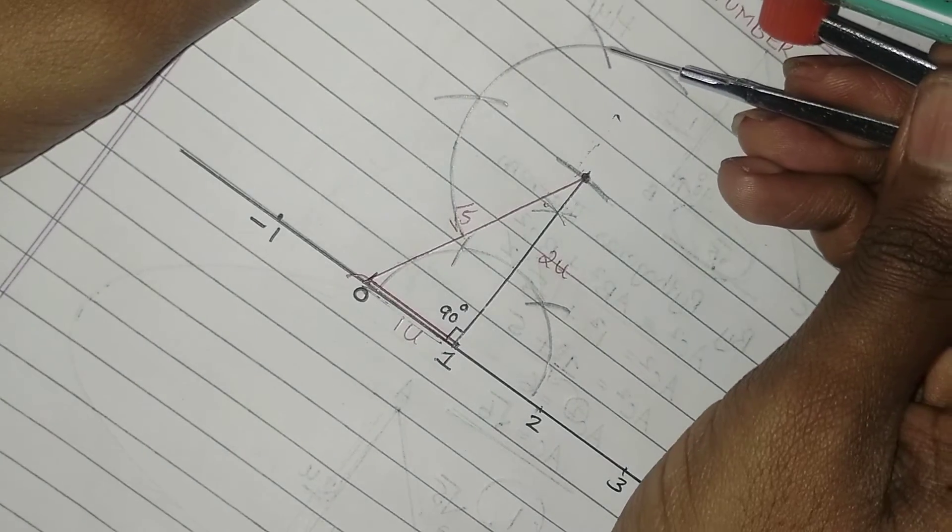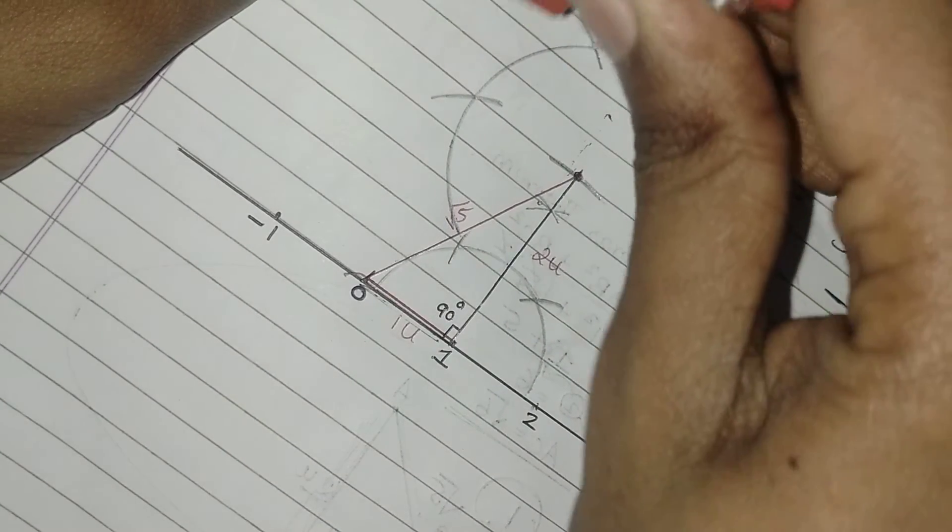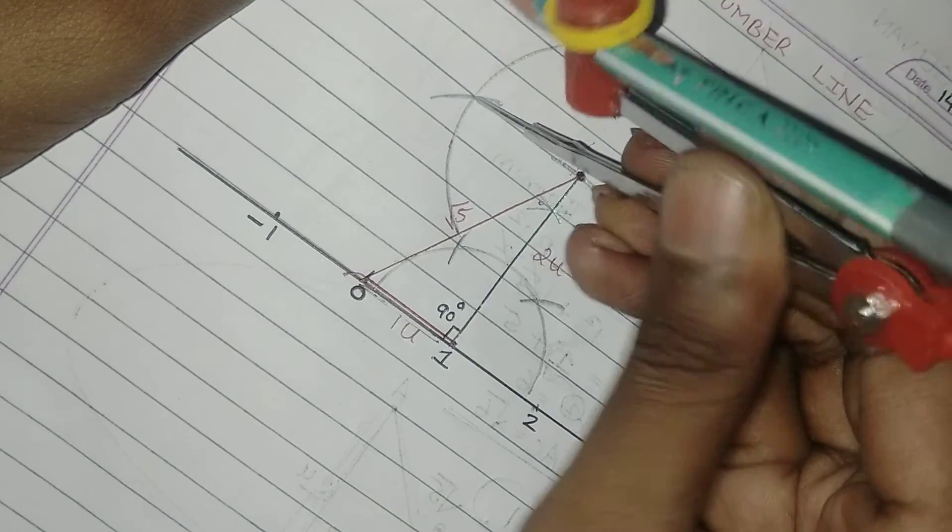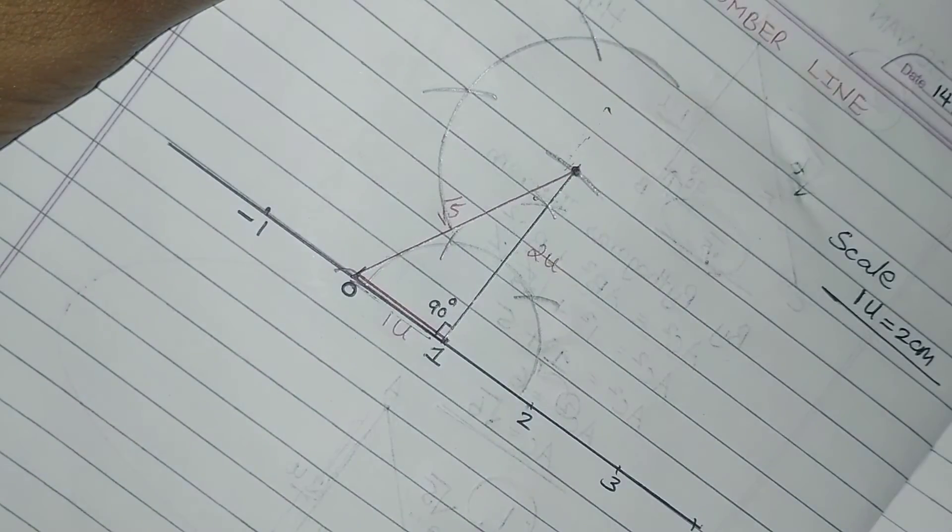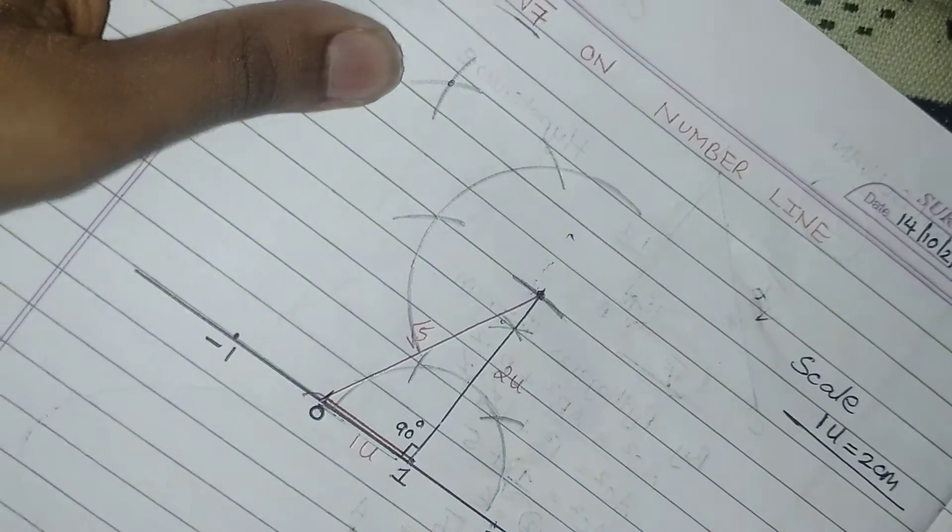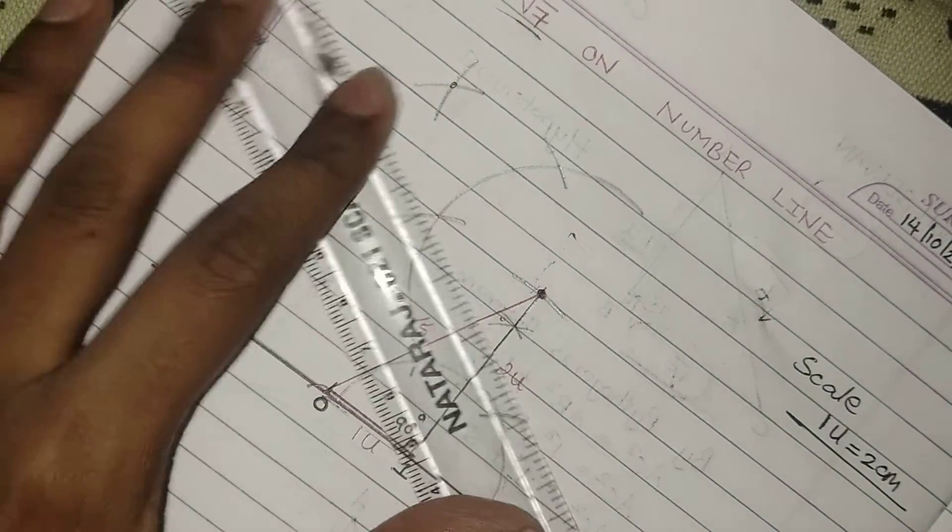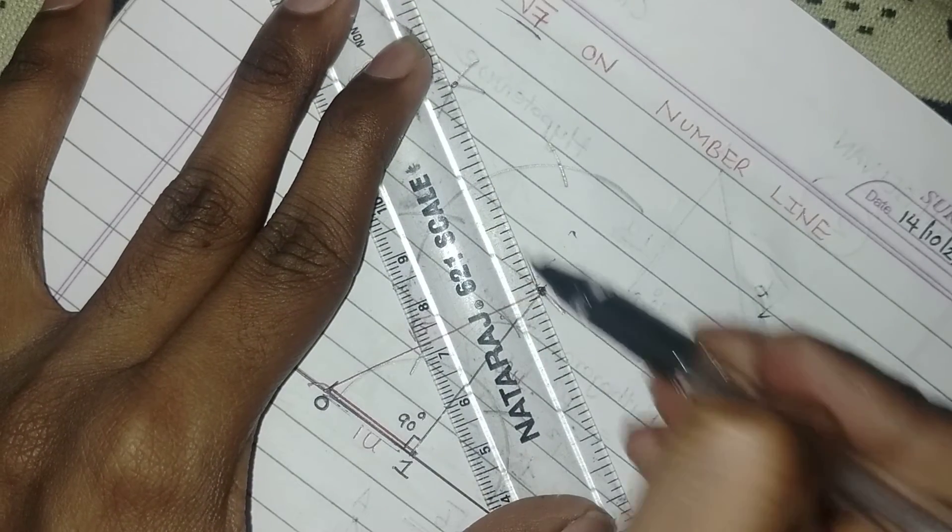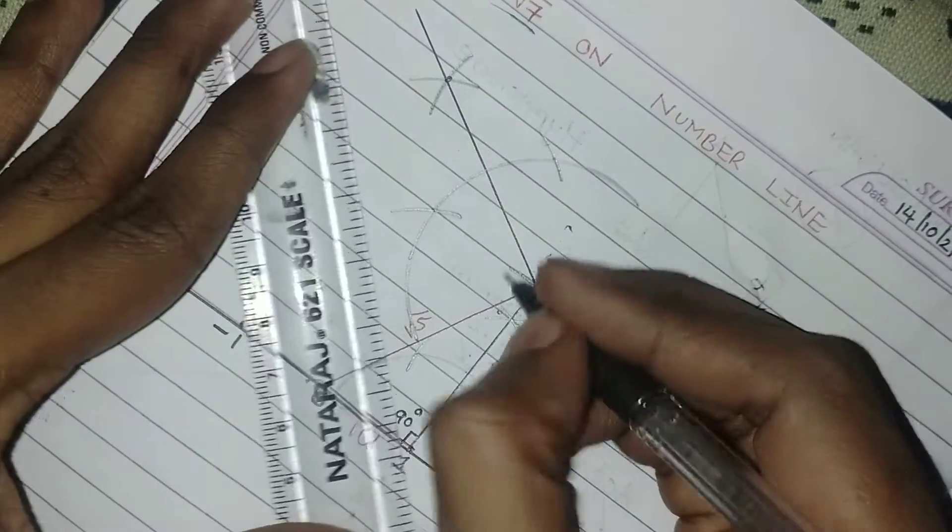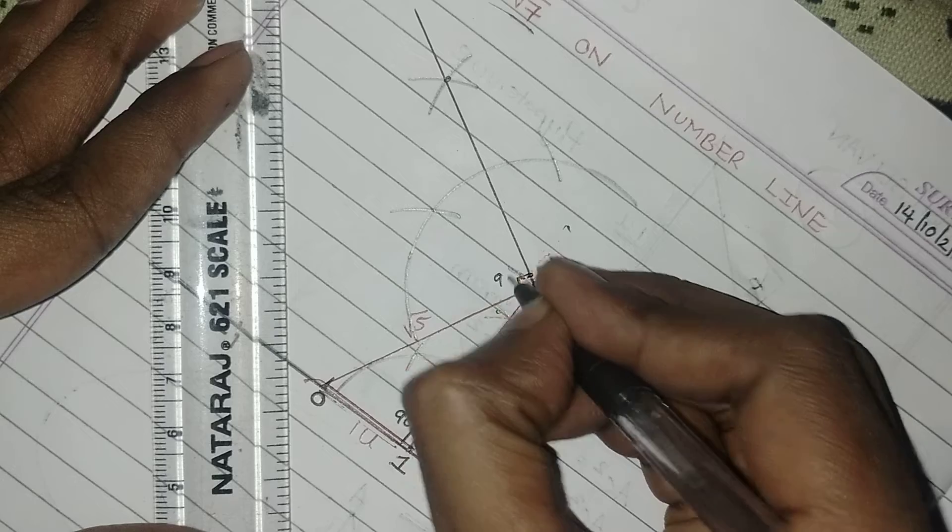Then from this, cut an arc. From here also, cut an arc. So join the intersection point like this. After that, you need to draw a perpendicular line like this. So this is my perpendicular line.